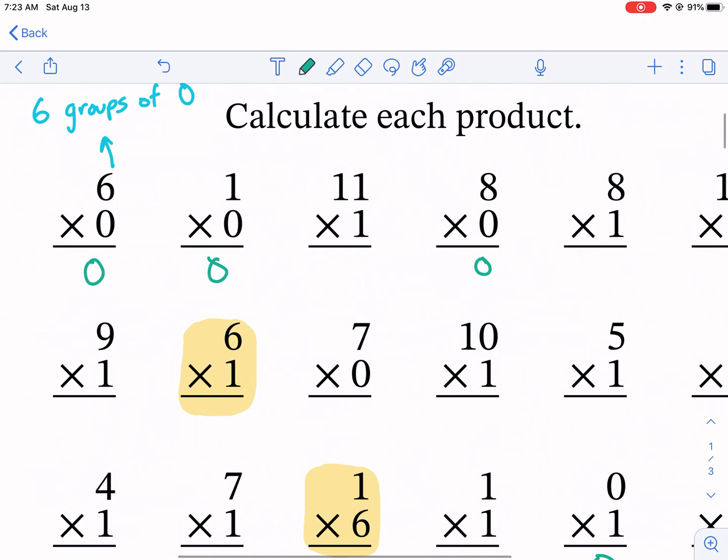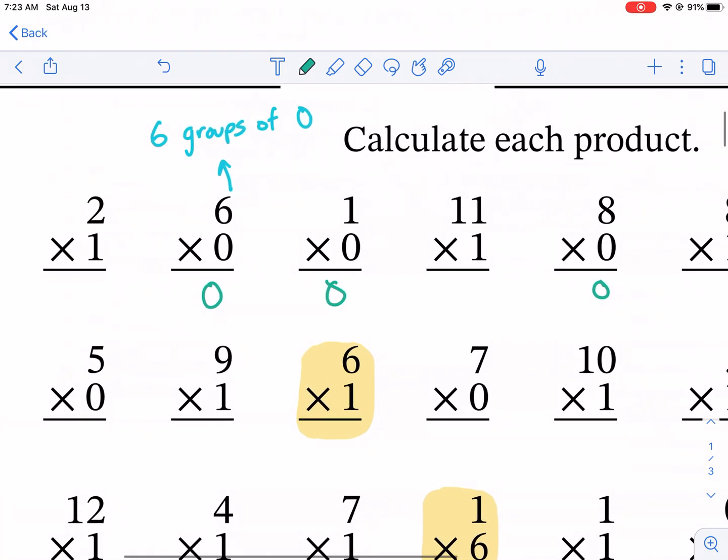Anytime you have a zero with a multiplication sign, the answer is gonna be zero. Real simple. I guess you could call it a trick, but it's a real simple solution to a multiplication problem. Anytime it's multiplied by zero, it's zero.